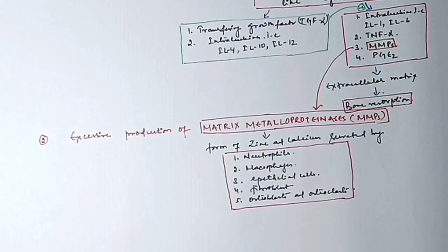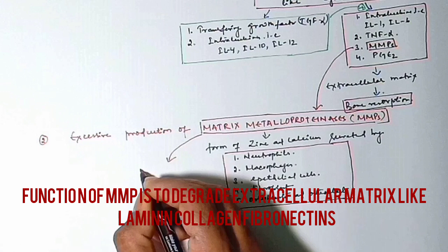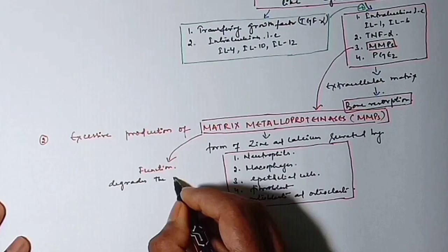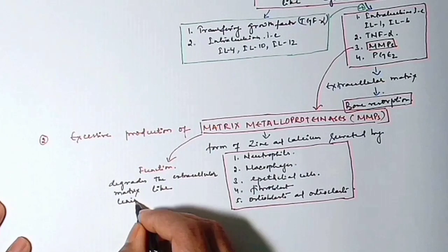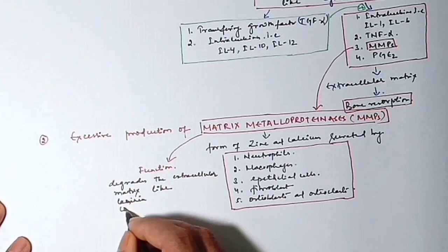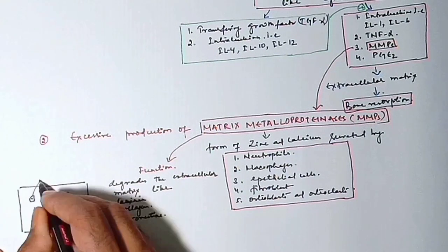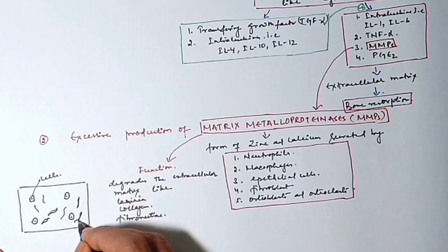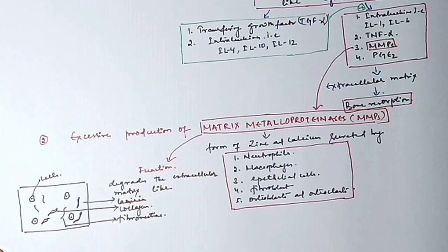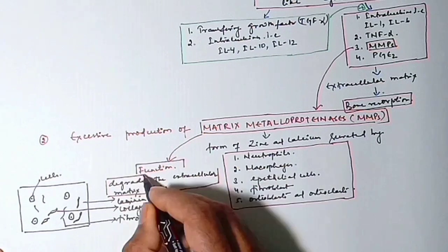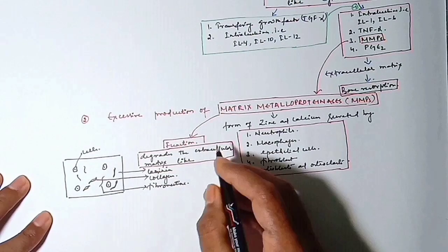Like laminin, collagenase, and fibronectin are in our extracellular matrix. If they degrade the extracellular matrix, that will eventually lead to bone resorption. Some studies have shown to inhibit this, we have the tetracycline antibiotic family, mainly the reduced dose doxycycline, that is also known as periostat.